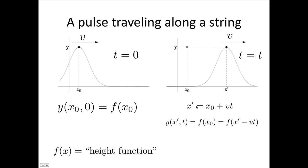Then x0 is x dash minus vt. So we can put in this is the same as f of x dash minus vt.